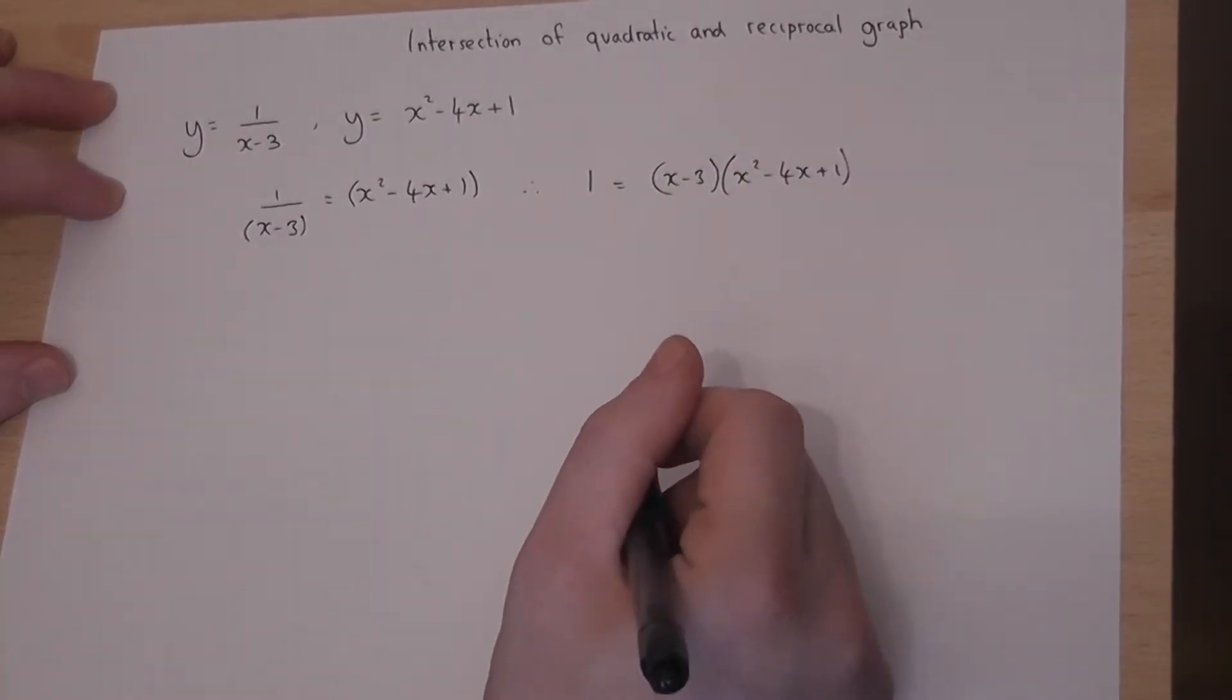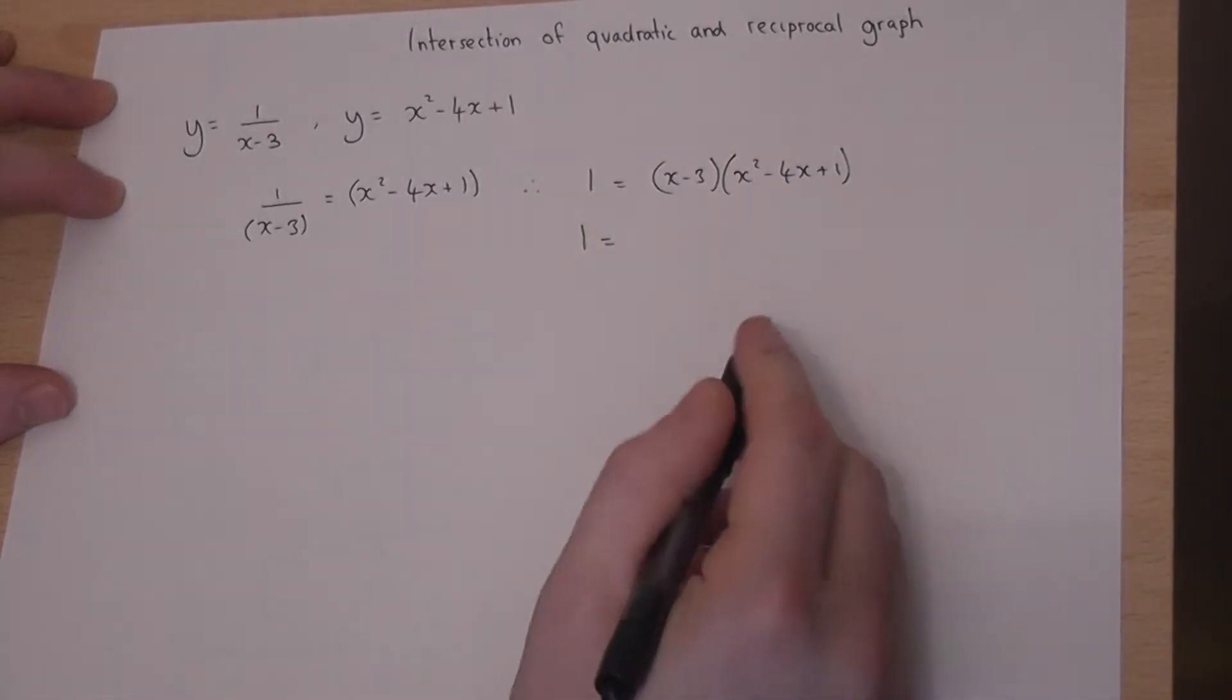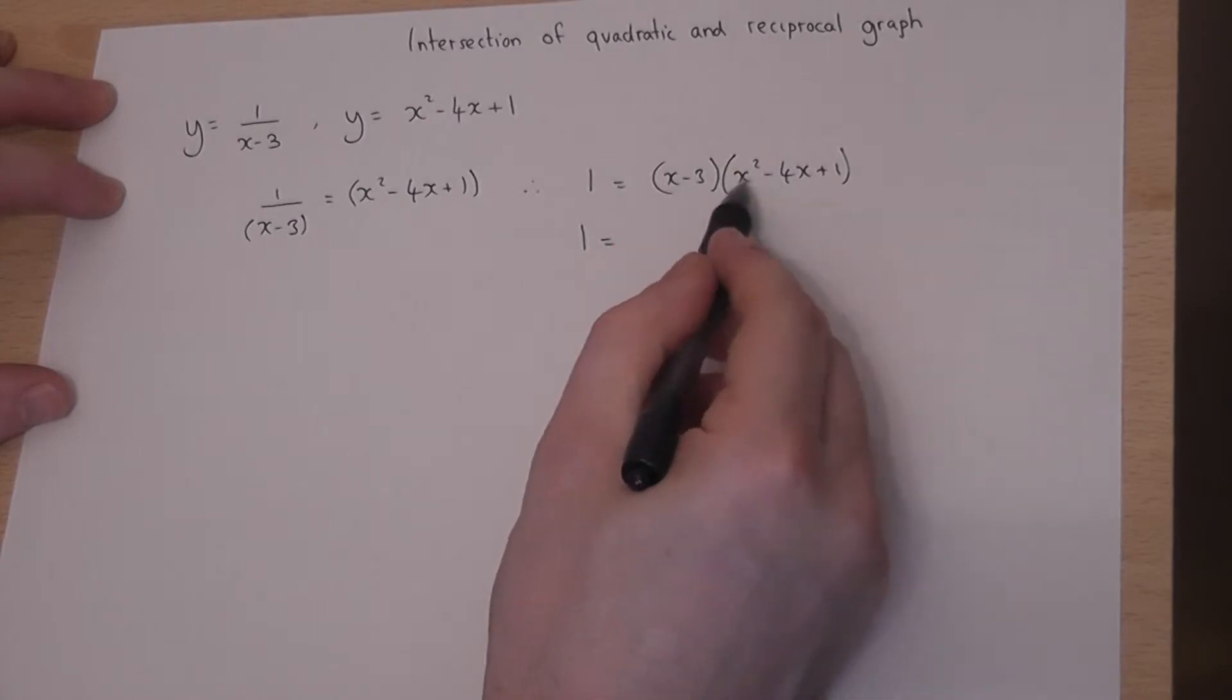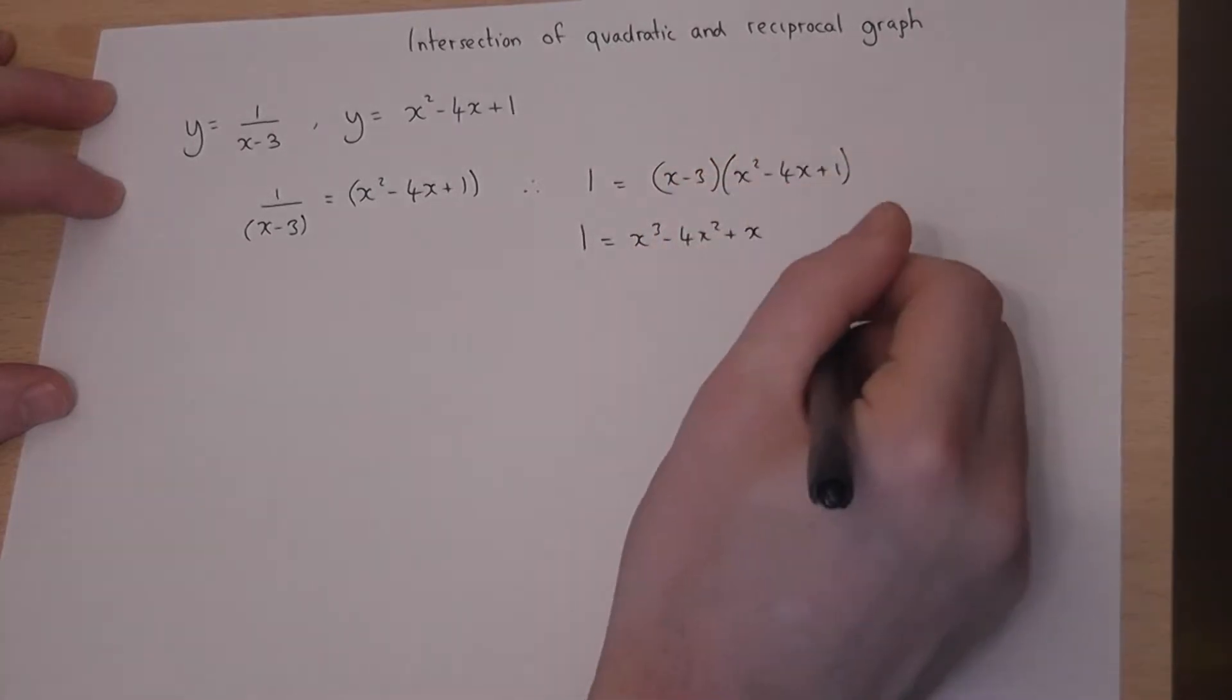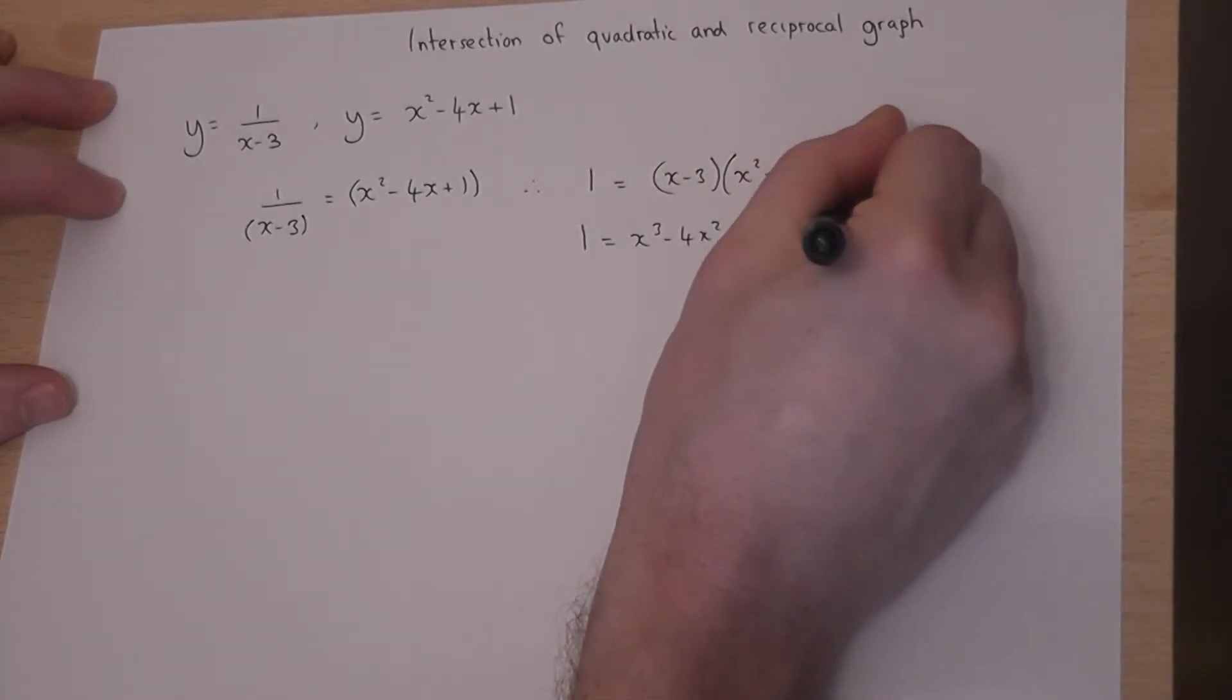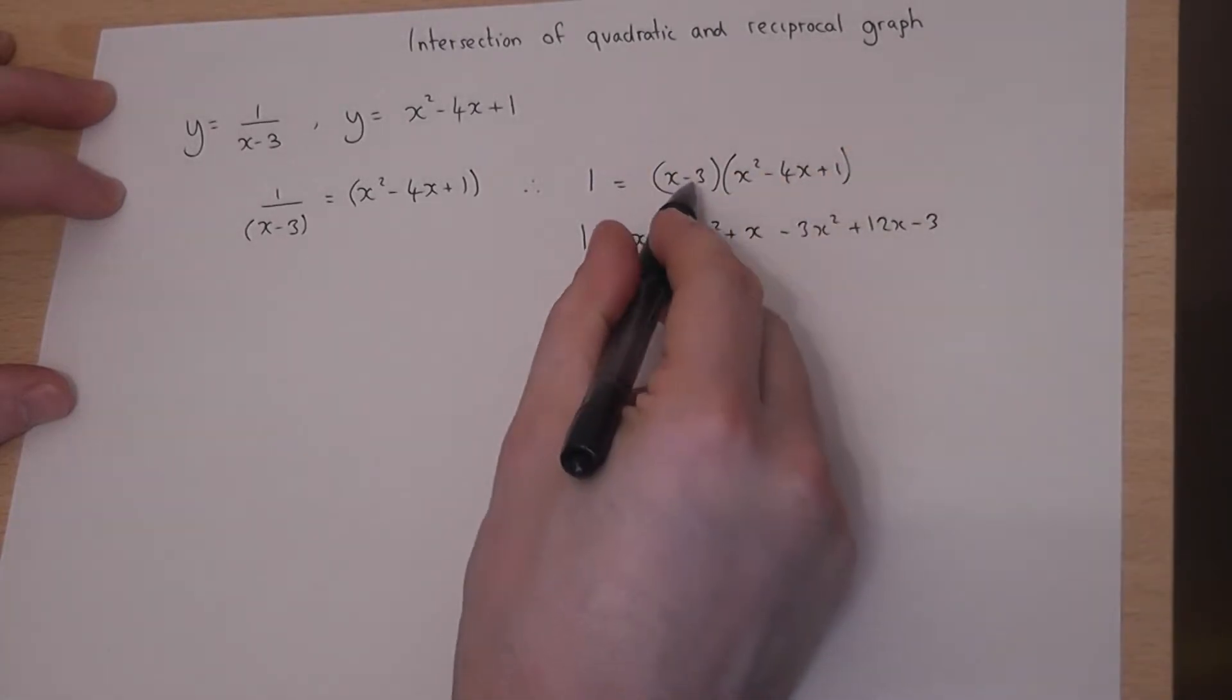So if I now expand this right hand side I get 1 is equal to, so I times by x through and then times by minus 3, x³ - 4x² + x, and I times by x, take away 3x² + 12x - 3, and I times by minus 3.